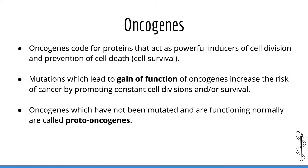Now let's talk about oncogenes. Unlike tumor suppressor genes, oncogenes have no role in regulating the cell cycle or DNA repair. Instead, oncogenes function as powerful inducers of cell division and prevention of cell death, also known as cell survival. Oncogenes code for proteins which stimulate cell division and survival. They typically act as molecular switches which can activate multiple pathways involved in cell division and cell survival. Unlike tumor suppressors, it is gain of function mutations — not loss of function — which lead to carcinogenesis.